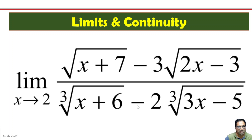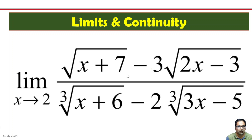We have square roots and cube roots. If we substitute x=2: 2+7 is 9, square root of 9 is 3; 2 times 2 minus 3 gives root of 1. In the denominator, cube root of 8, and for 3 times 6 minus 5 we get cube root of 1. So the numbers within the square roots and cube roots are looking decent.